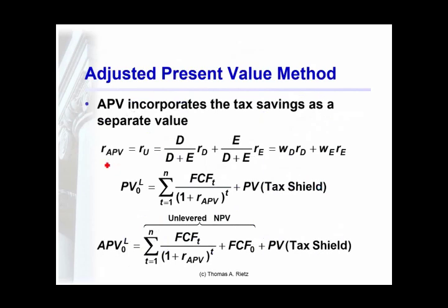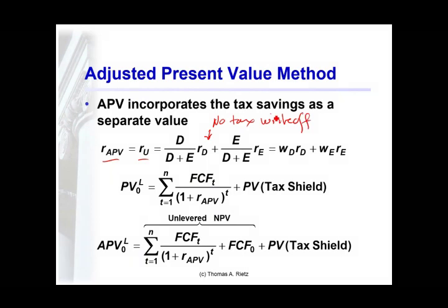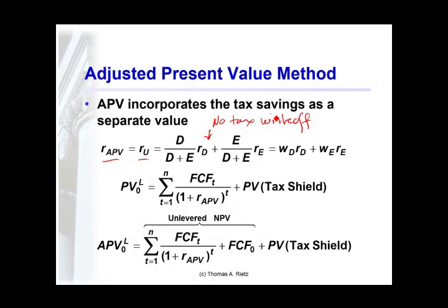The unlevered weighted average cost of capital — without leverage — is just the weighted average cost of capital, except there's no tax shelter effect in it. The reason for that is we'll account for the tax shelter as a separate set of cash flows. We should not account for it both as a cash flow and in the discount rate.